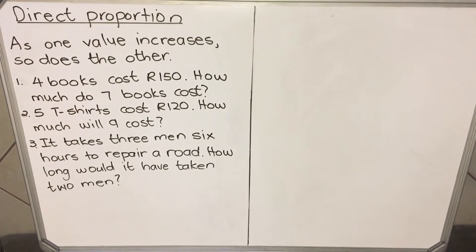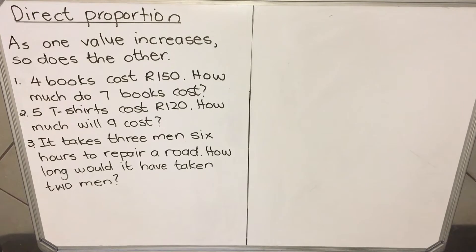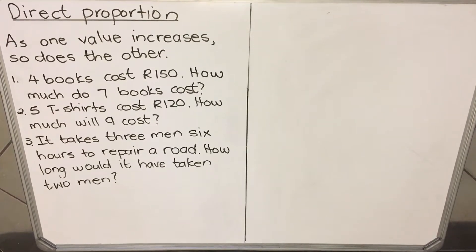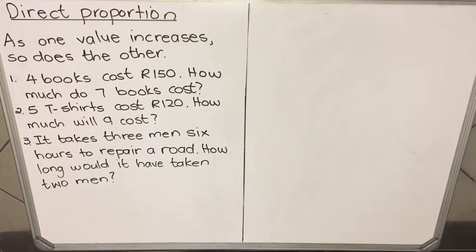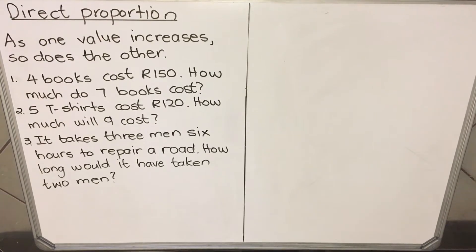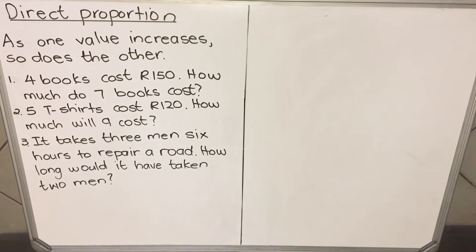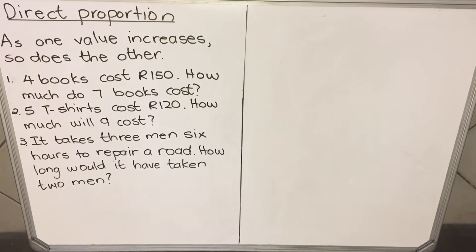So for example, let's look at the first example, number one. They say four books cost R150. So with direct proportion, it means as the number of books increases, the cost will also increase. That's how direct proportion works.